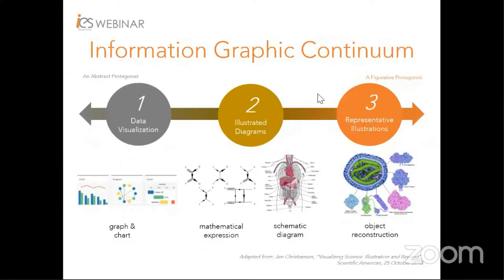From now on, let's focus on graphical design skills, beginning with the information graphic continuum. Broadly, there are three types of visuals. The first, from the left, is data visualization — from a designer's perspective without domain knowledge, it is abstract. Examples include graphs and charts, commonly used by researchers to show results. Moving along the continuum, visuals become increasingly informative in the forms of mathematical expressions and schematic diagrams. Both data visualization and illustrated diagrams are commonly used by researchers in their publications and are often monochrome — visually abstract without reading the manuscript.